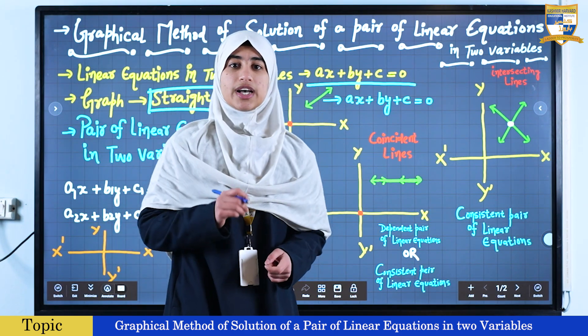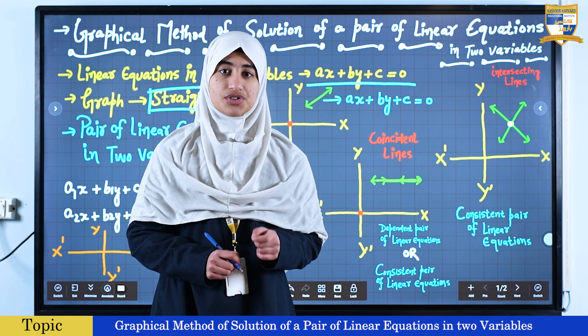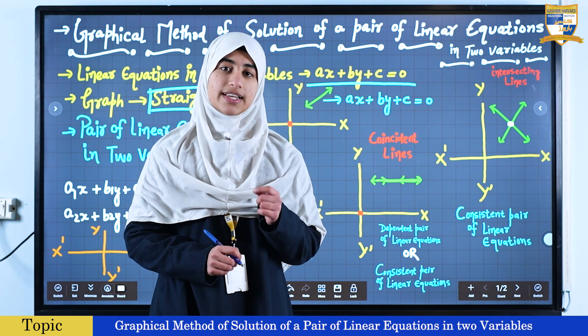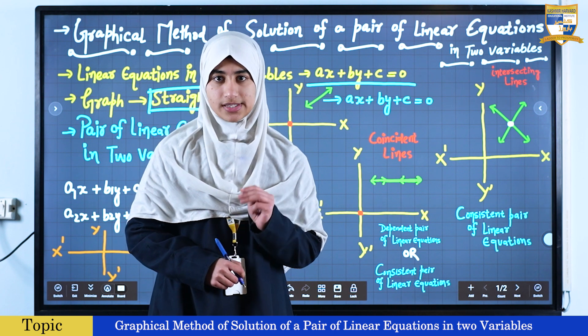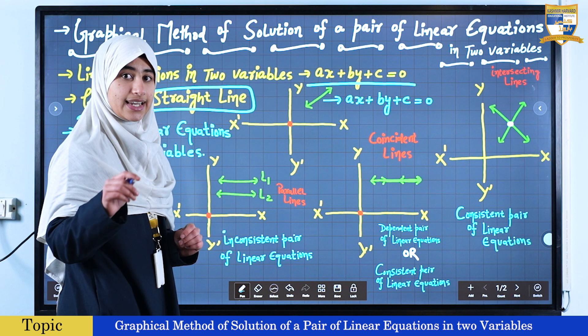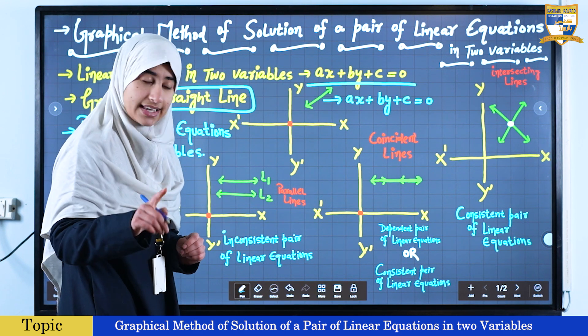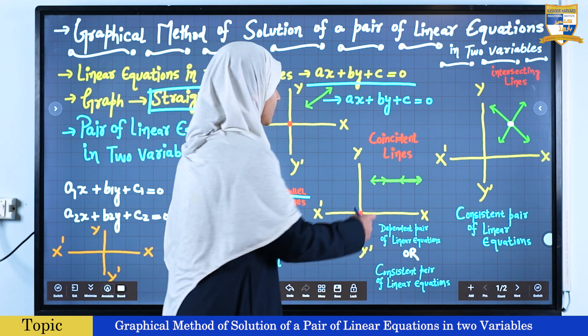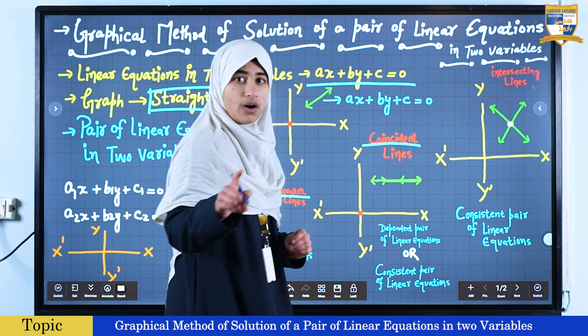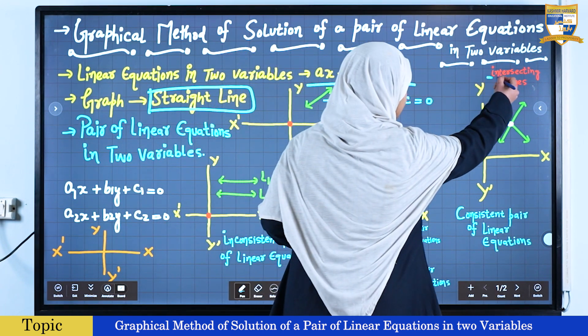Now here we are dealing with graphical representation of simultaneous pair of linear equations in two variables. Therefore, there are only three possibilities: either the lines will not intersect each other at any point, that is they are parallel, or the lines will be coincident, or the lines may be intersecting.